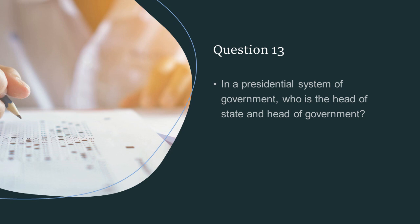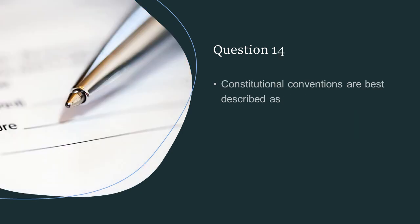In a presidential system of government, who is the head of the state and head of government? The President. Constitutional conventions are best described as unwritten practices and norms.